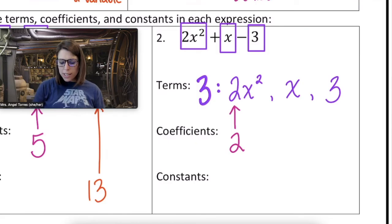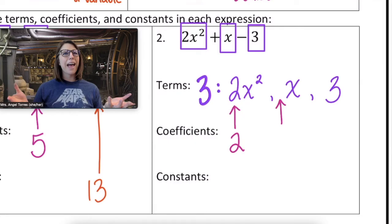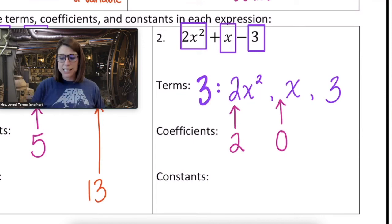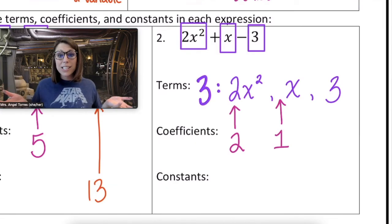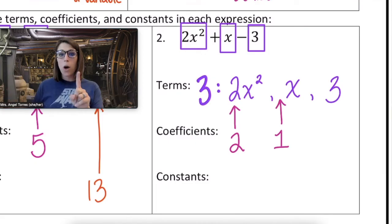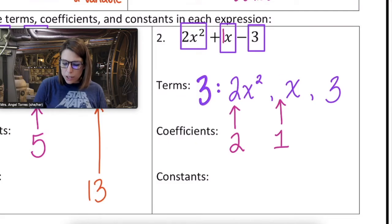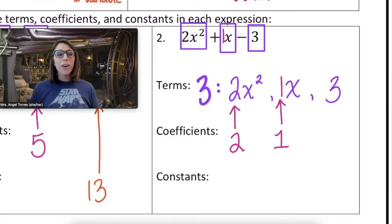Ooh, but what's the coefficient of x? Some students think it would be zero, but careful, zero times x would be zero. That term wouldn't even exist. When you have a variable by itself, we call this a hidden 1. Because how many x's do you see? Just 1x. So we can actually add that 1 into our expression if we want to, to make our lives a little easier.